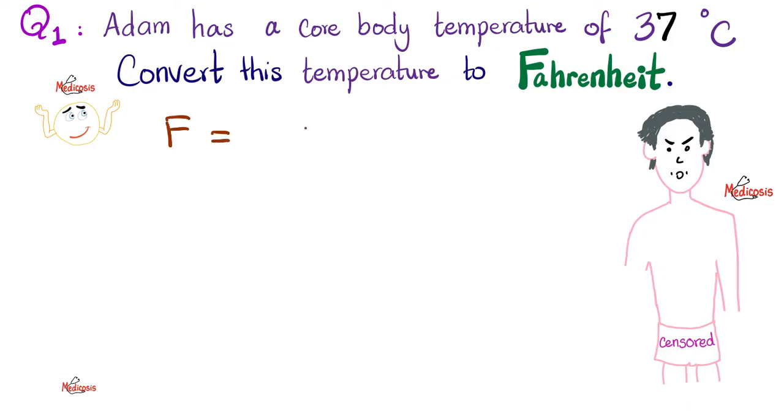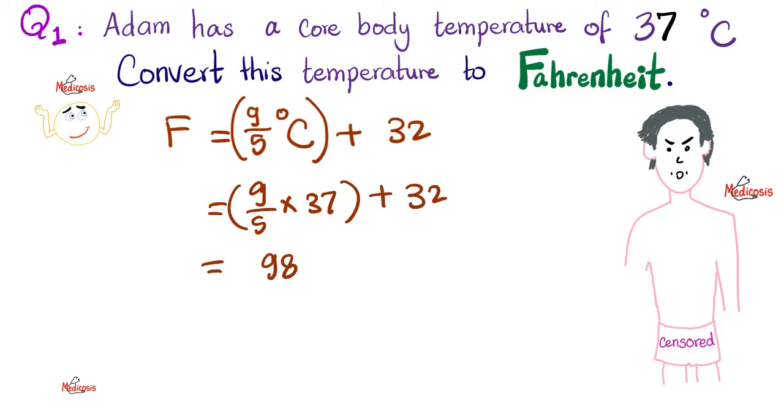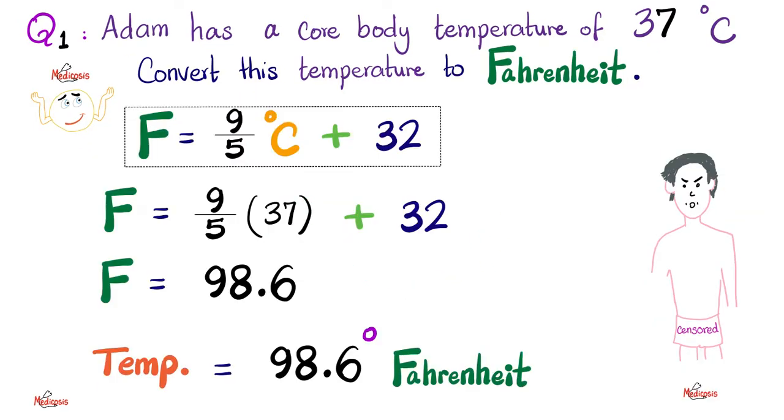Feel free to pause the video and try to answer this yourself. I know that temperature in Fahrenheit equals temperature in Celsius, but I need to multiply this by 9 over 5. And then what? You add to that 32. Therefore, I have 9 over 5, multiply this by 37. And then when you multiply them, add 32, which gives me an answer of 98.6 degrees Fahrenheit. These are actual numbers. This is about the average normal human temperature in Celsius. And this is the same temperature in Fahrenheit.